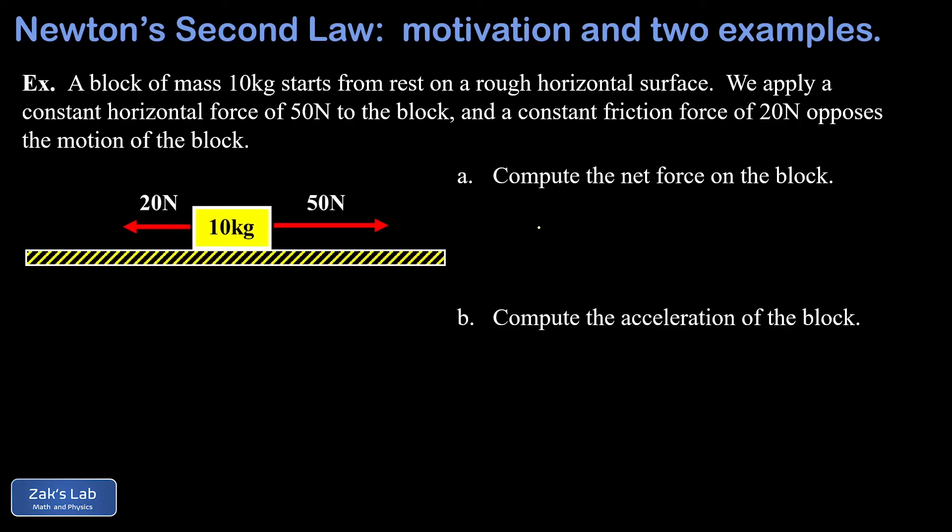In part A, we're asked to compute the net force on the block. And because we're dealing with a one dimensional situation, we just use plus and minus signs to account for direction. So our net force is given by our 50 newton vector pointing to the right. That counts as positive minus our 20 newton force pointing to the left. That gives us a net force of 30 newtons pointing to the right.